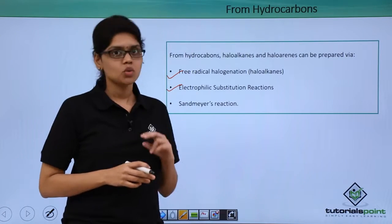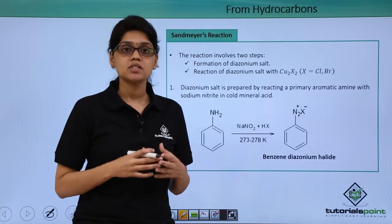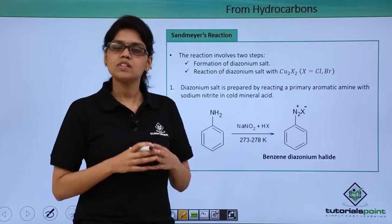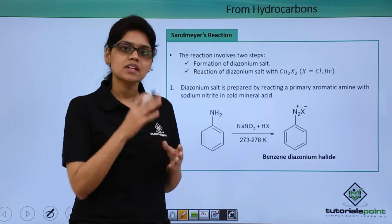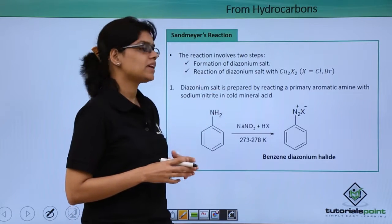This reaction essentially involves two main steps. The first step is the formation or preparation of diazonium salt and the second step is the reaction of diazonium salt with cuprous halide. This gives the corresponding aryl halides. In the first step, let us see how to prepare diazonium salt.